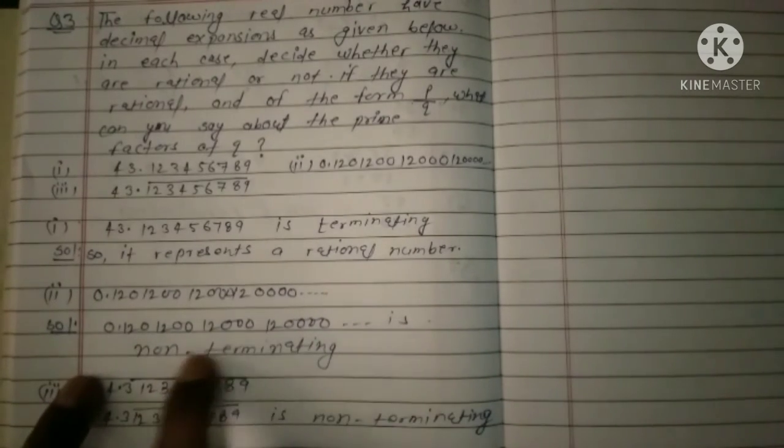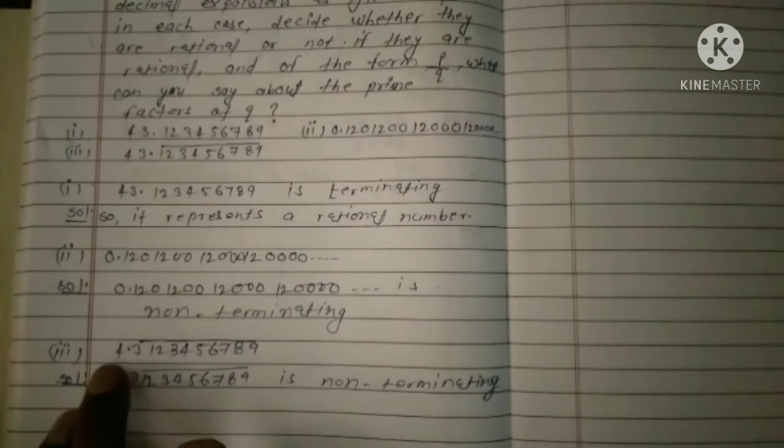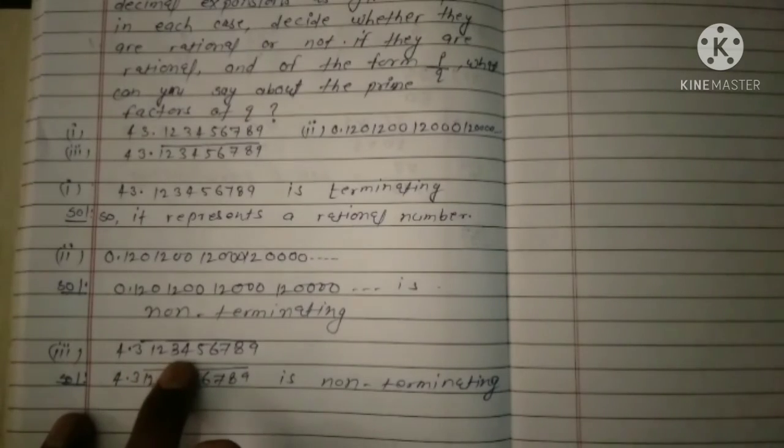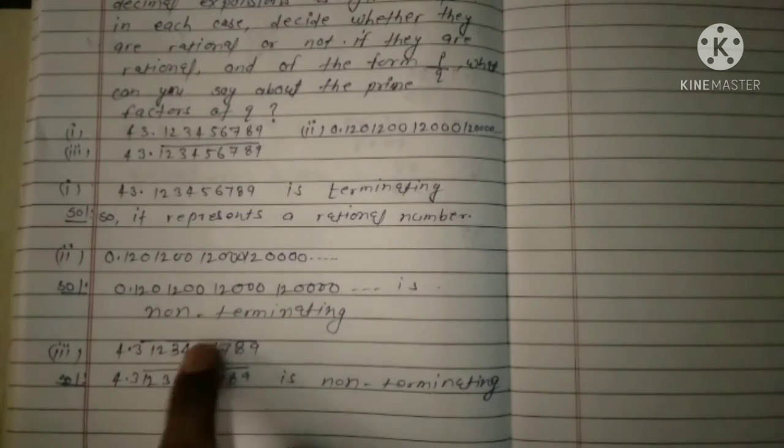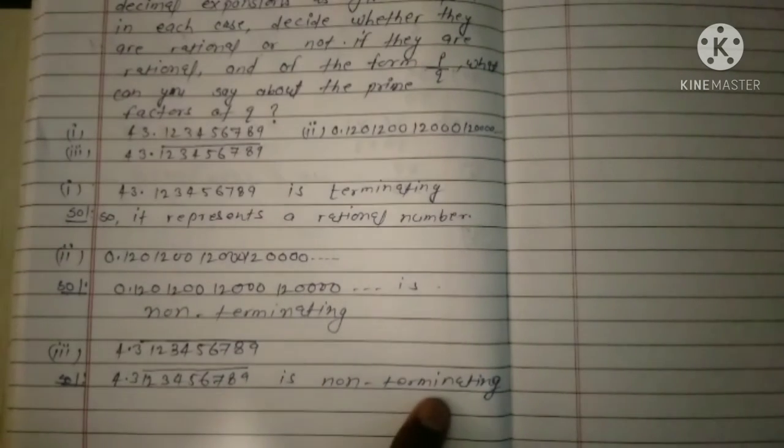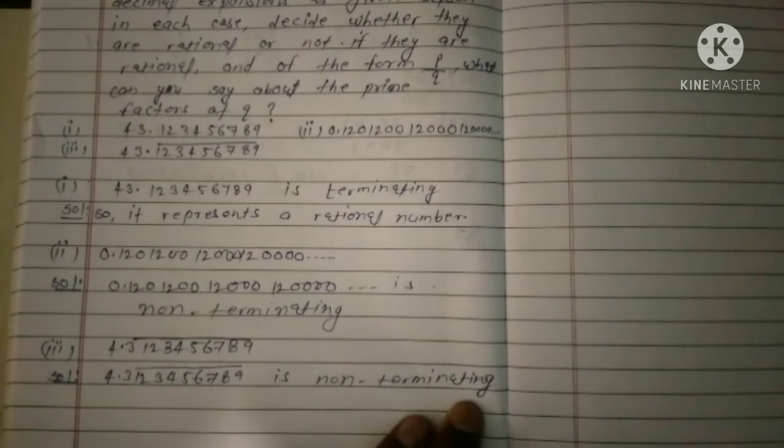Now look, 4.3123456789 has a bar on it, so this is non-terminating decimals. So everyone, please like and subscribe to our YouTube channel J2 Sir.